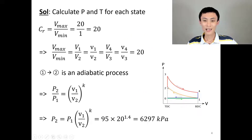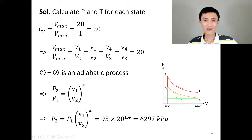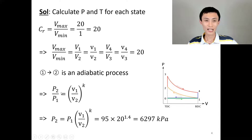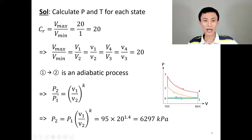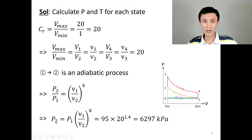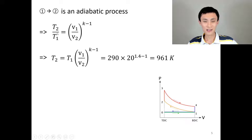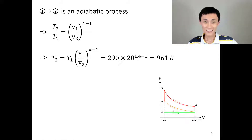For state 2: since process 1→2 is isentropic, we can use the pressure relation and temperature relation directly. We know p1 and the compression ratio, and for air k = 1.4. We calculate p2 from the pressure relation, then plug into the temperature relation to get T2. We now know everything at state 2.